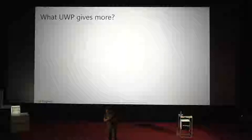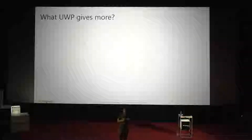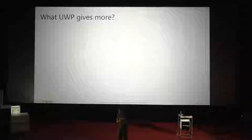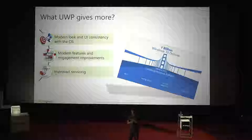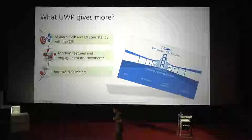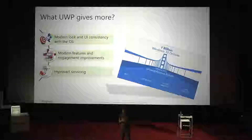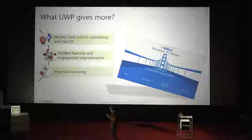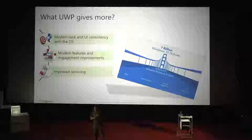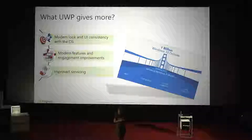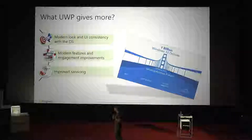What actually does UWP give us more compared to WinForms and WPF? Why should a developer choose UWP? The first thing is the consistent UI look and feel with the operating system. Two years ago at Build, Fluent Design was introduced, and it is integrated into the UWP framework out of the box — you can use it without any additional coding. The next thing is modern features like Toast Notifications, Push Notifications, Live Tiles, Speech Recognition, and many more, all available out of the box.